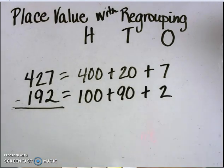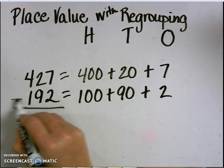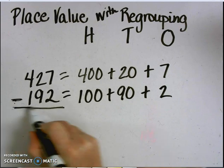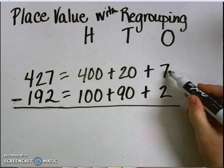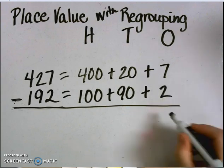Now that I've broken apart by place value, I need to subtract each one of those place values. I'll start in the ones place. 7 subtract 2 equals five.